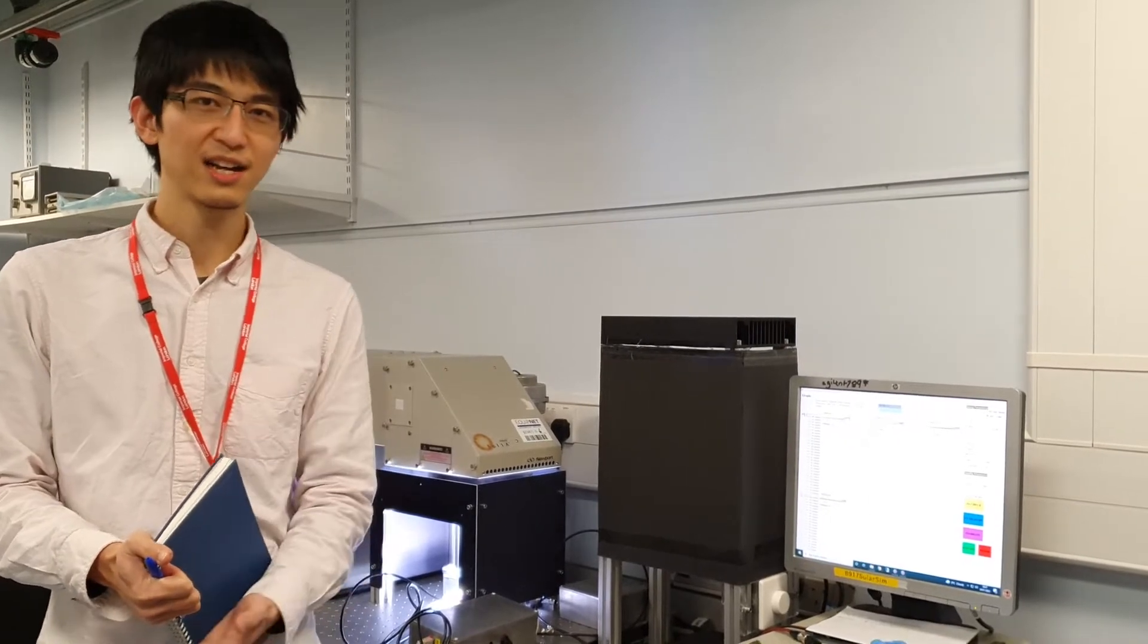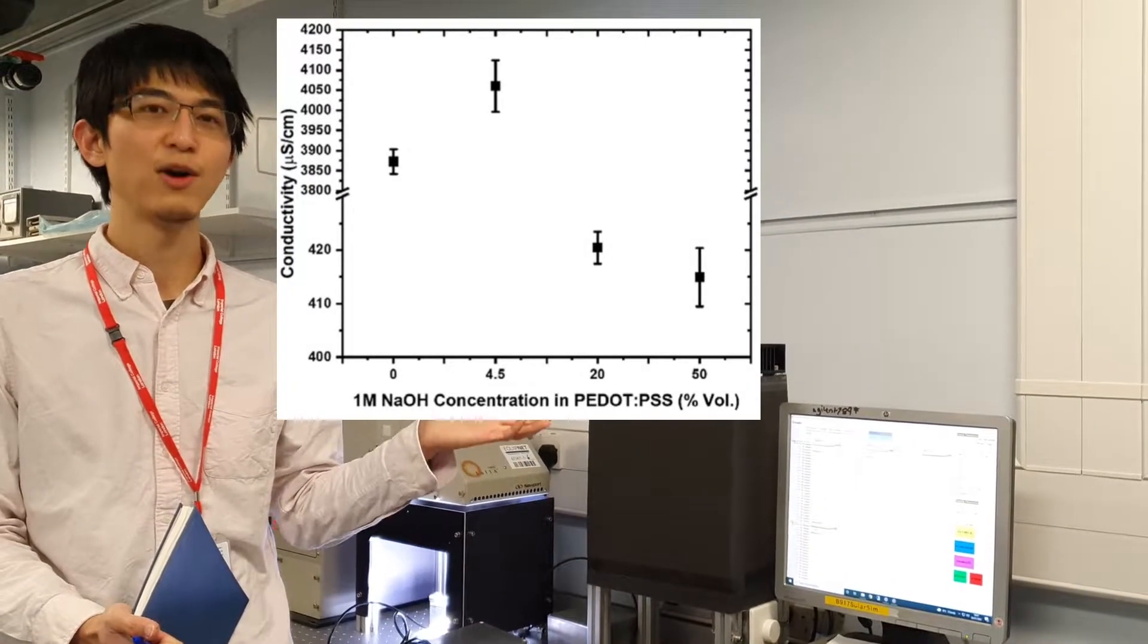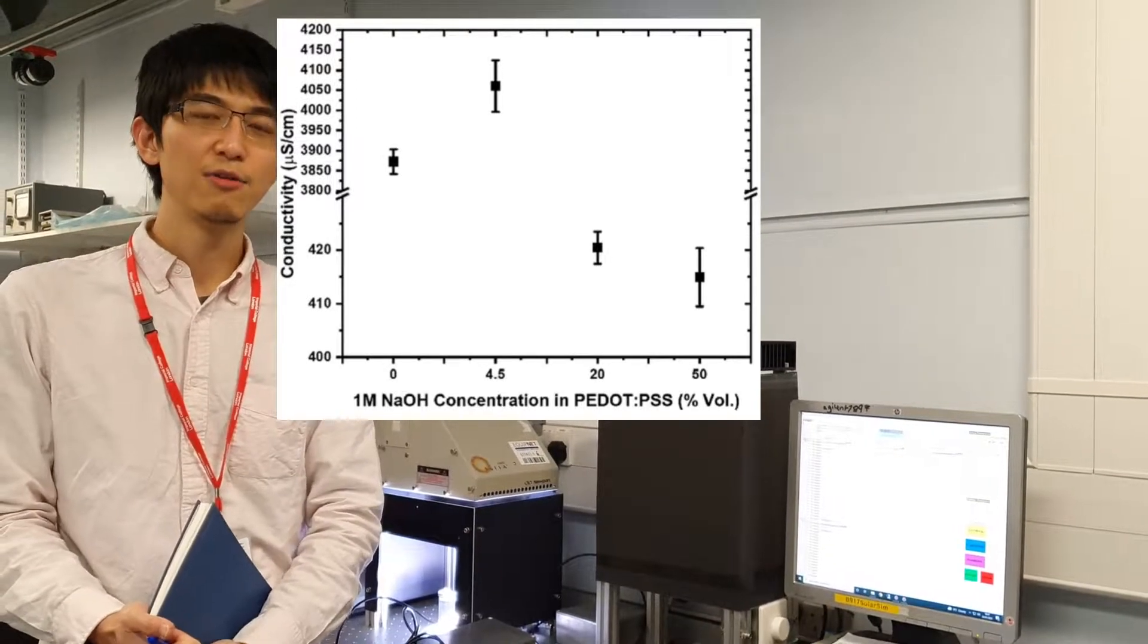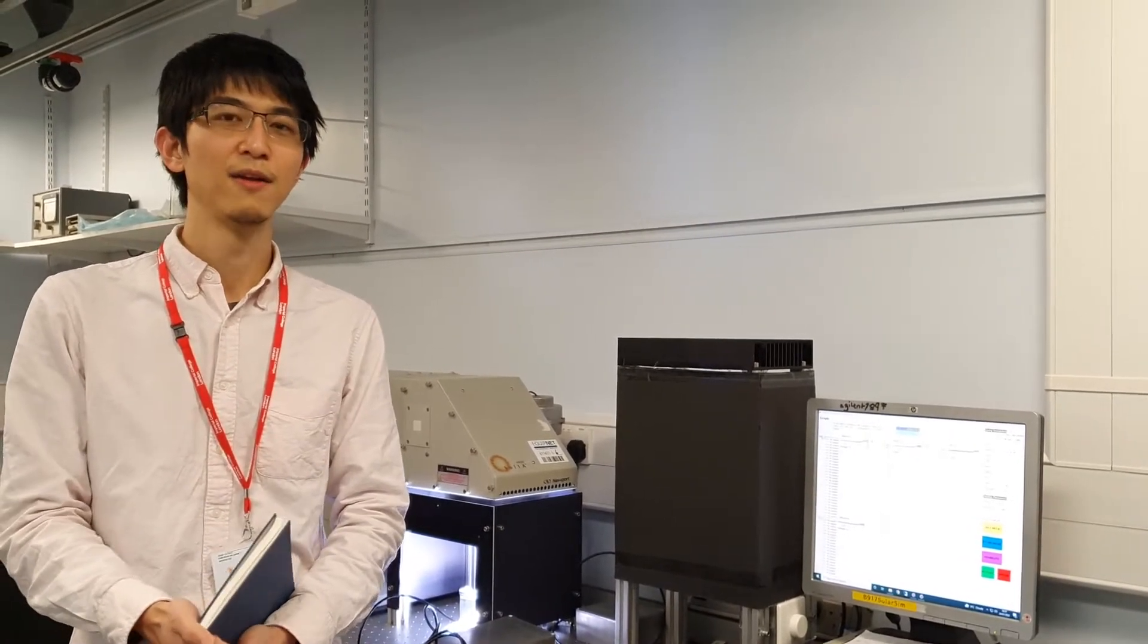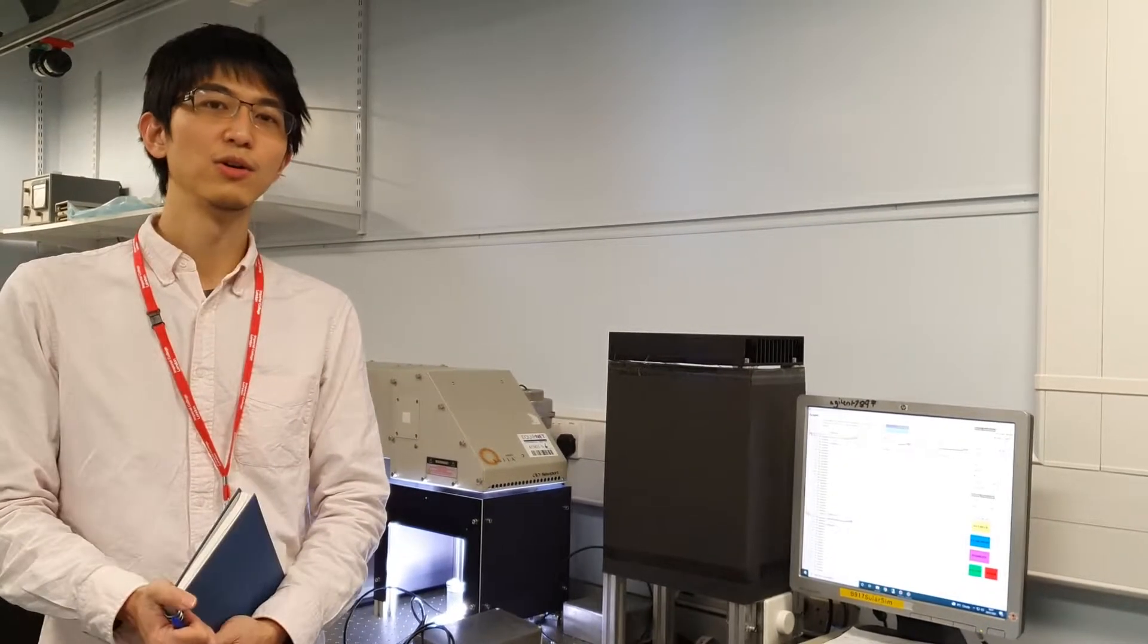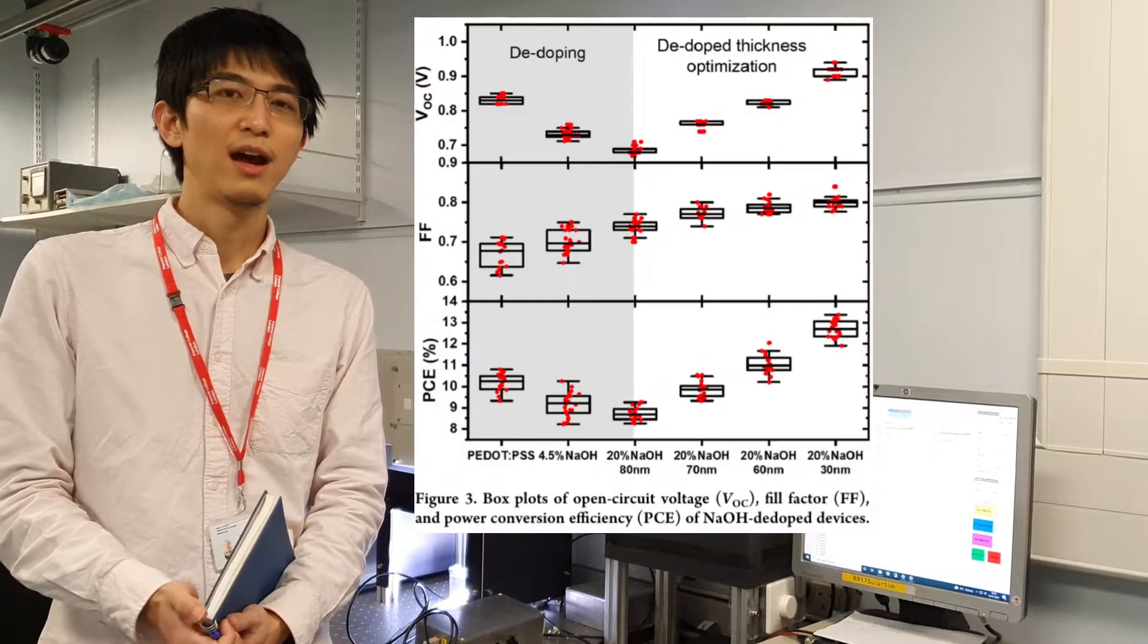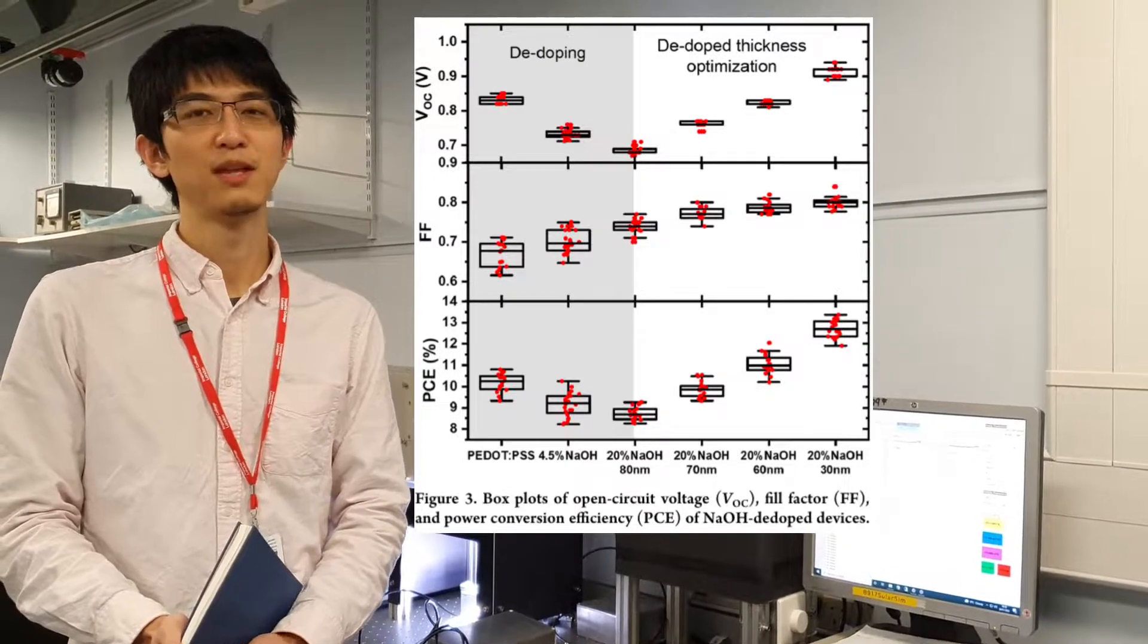We try to check the conductivity of the PEDOT:PSS after de-doping. We notice there is a significant drop of the doping level as well as the conductivity, and low conductivity is not very nice for charge extraction. As you can imagine, with the same thickness but lower conductivity, the charges are going to transport with a longer time, which means they're having more chances to meet the counter charges and recombine. So in order to overcome the low charge conductivity, we actually minimize the thickness of our PEDOT:PSS, took the most de-doped PEDOT:PSS and tried to dilute it with deionized water. By doing so, we successfully regained our VOC as you can see in this chart, and that's a very significant improvement to the overall performance.